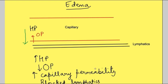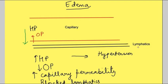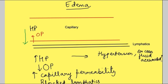Increased hydrostatic pressure occurs in conditions like hypertension, where there is increased blood pressure, or in cases of excess fluid accumulation such as heart failure. It can also be iatrogenic — when a doctor administers fluid to a patient and it is not monitored properly, giving excess fluid can lead to edema because hydrostatic pressure increases.